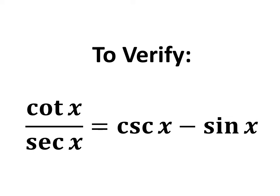In this video, we will learn to verify the trigonometry identity cotangent of x upon secant of x is equal to cosecant of x minus sin of x.